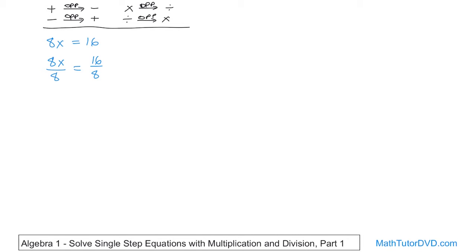You've divided the entire left-hand side by 8 and the entire right-hand side by 8. On the left, you have 8 times x divided by 8. The 8 divided by 8 is 1, so the 8s divide out and all that's left is x. On the right, 16 divided by 8 is 2. So x equals 2. You can verify: if you take this value and stick it in for x, 8 times 2 is 16. So you do the opposite operation to get x by himself.